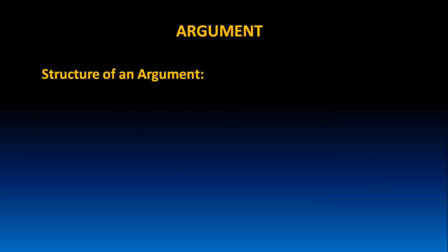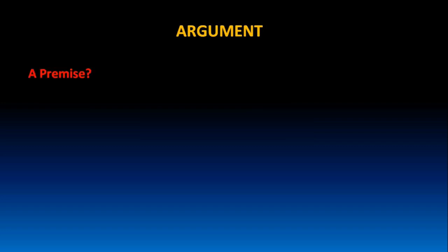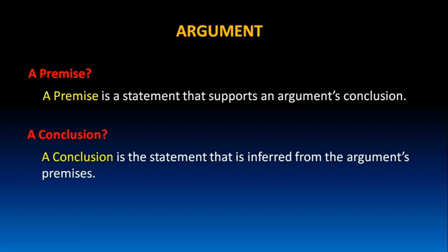Now let us understand the structure of an argument. Any argument contains two basic parts: premises and conclusion. A premise is a statement that supports an argument's conclusion. A conclusion is the statement that is inferred from the argument's premises.